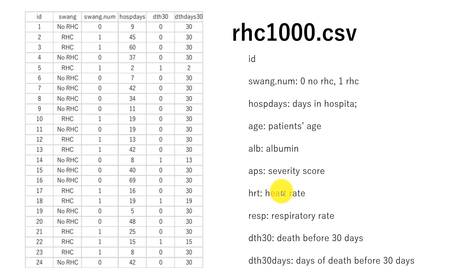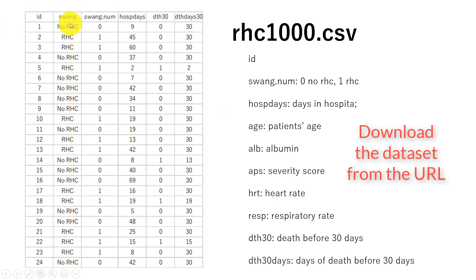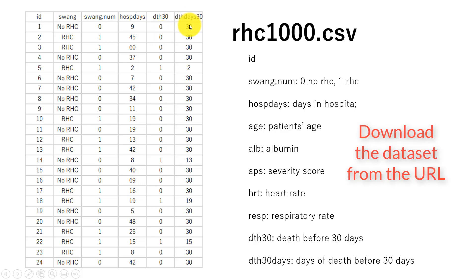Here is the dataset. We have an ID variable, and the variable called SWANG shows who had right heart catheterization and who did not. SWANG dot number is the numeric coding for SWANG. Hosp days indicates hospital days. DTH30 indicates whether the patient died or survived at the end of 30 days from ICU admission. And death days 30 indicates time to death within 30 days from ICU admission.